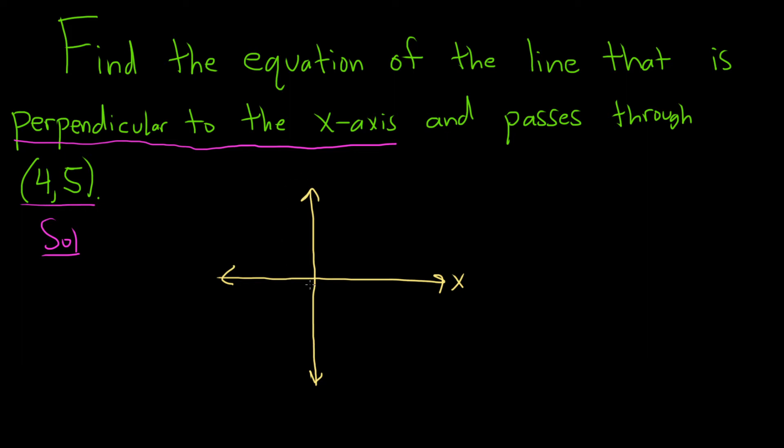From the origin, that means we have to go right 4: 1, 2, 3, 4, and up 5: 1, 2, 3, 4, 5. And we put a dot here at that point. So this is our point (4,5).